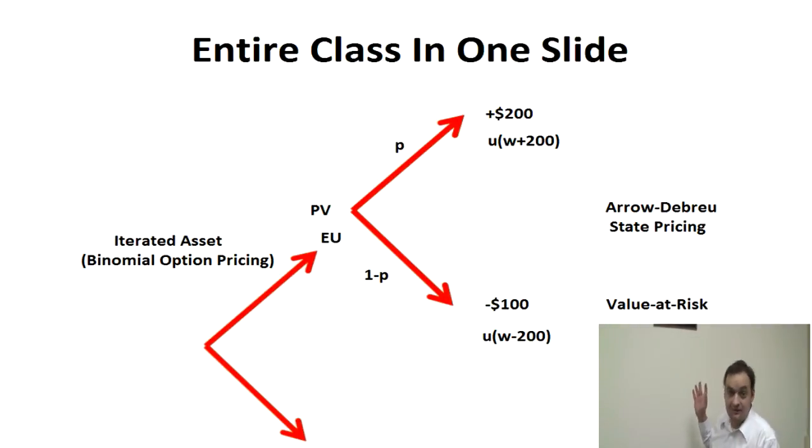Figuring that out, that's the essence of Arrow-Debreu State Pricing. It's probabilities, it's expected value, it's discount. You can incorporate not just concepts of expected value, but expected utility as well.